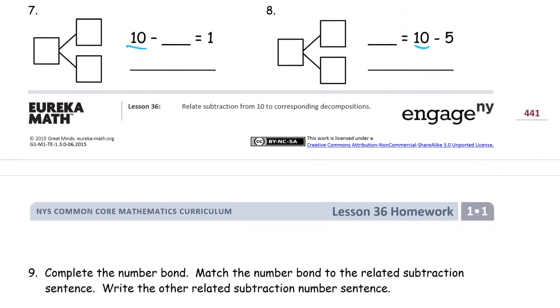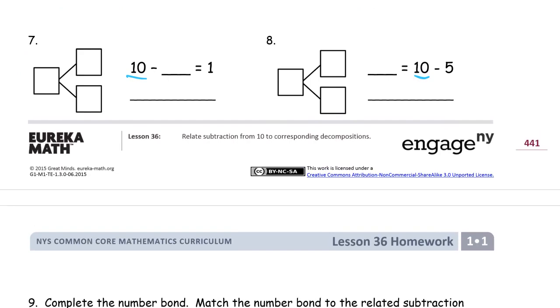And for number 7, 10 minus, that's a 1, and I know I have to take away 9 to have 1 left for 10. 10 with parts of 9 and 1. And our related subtraction sentence is going to be 10 minus 1 equals 9.